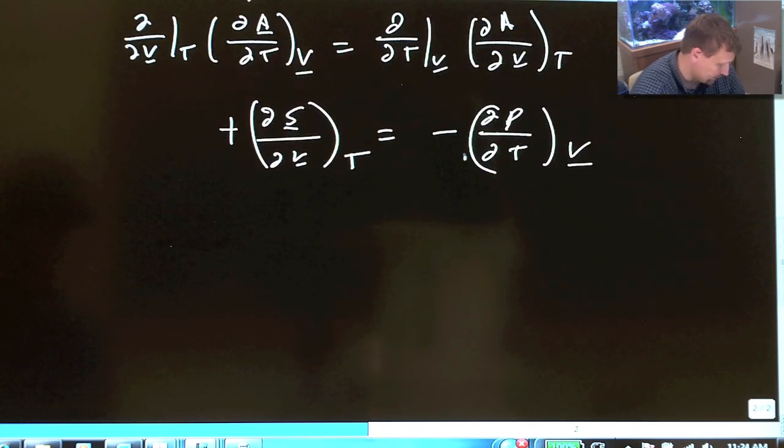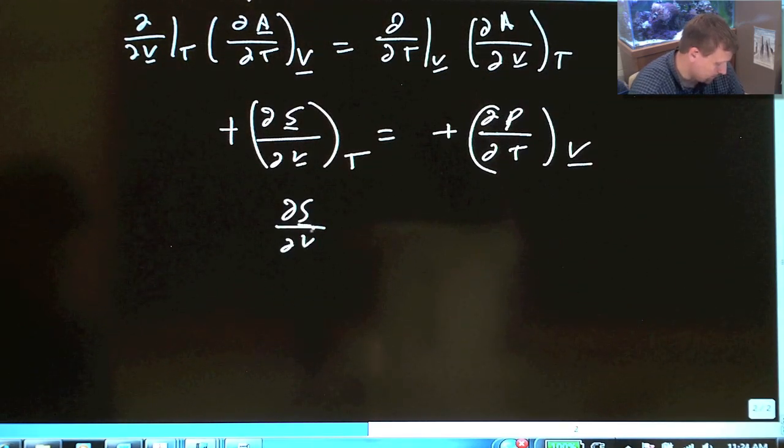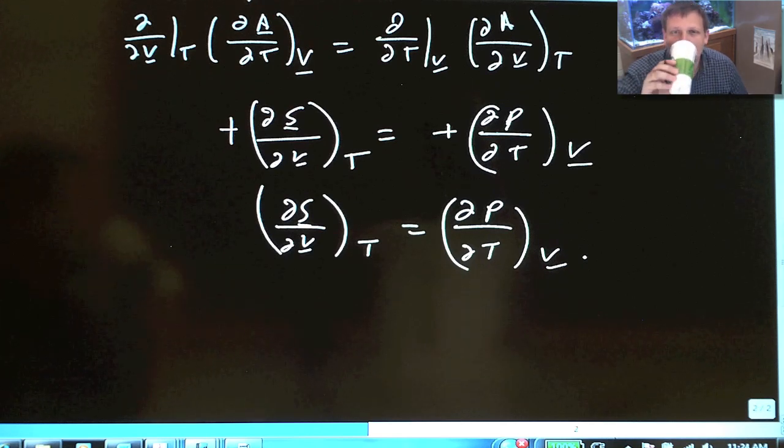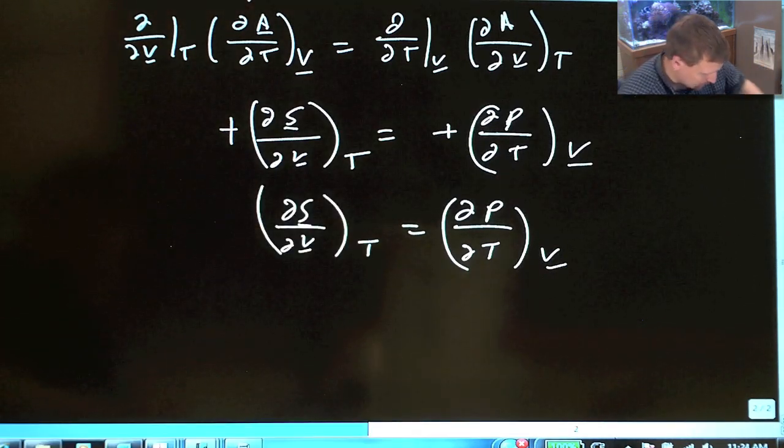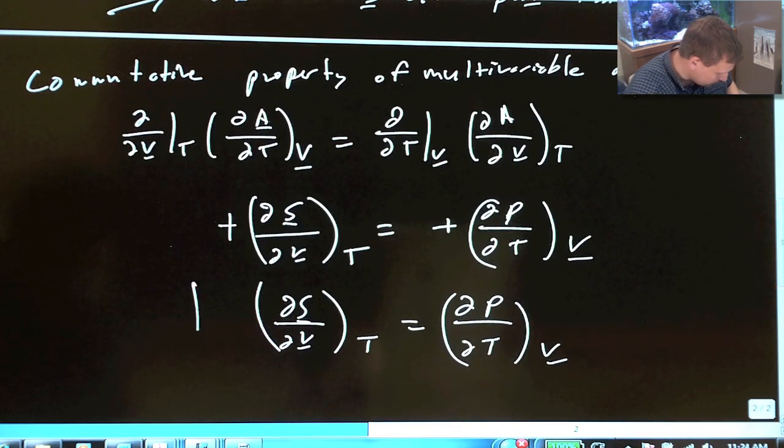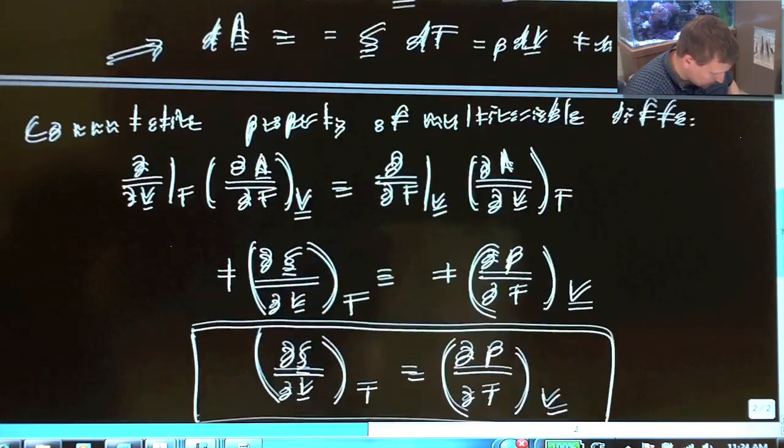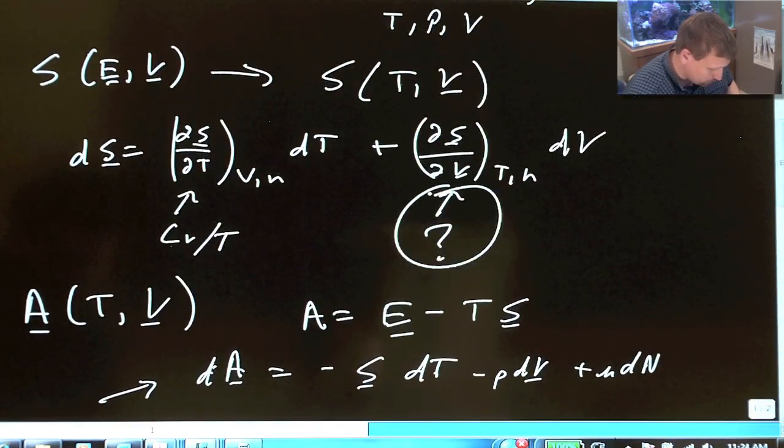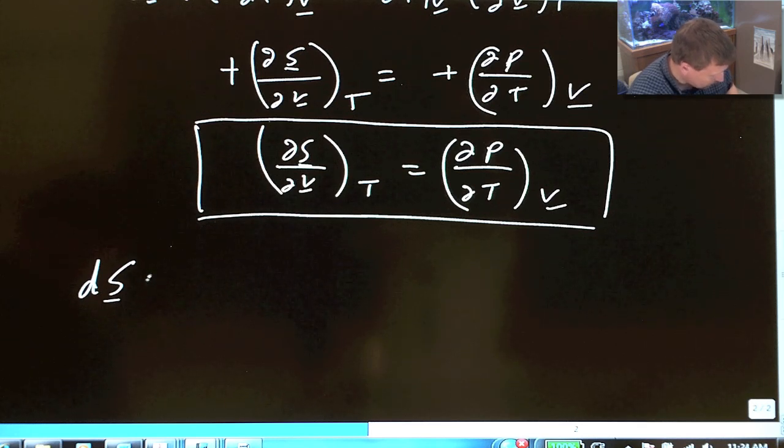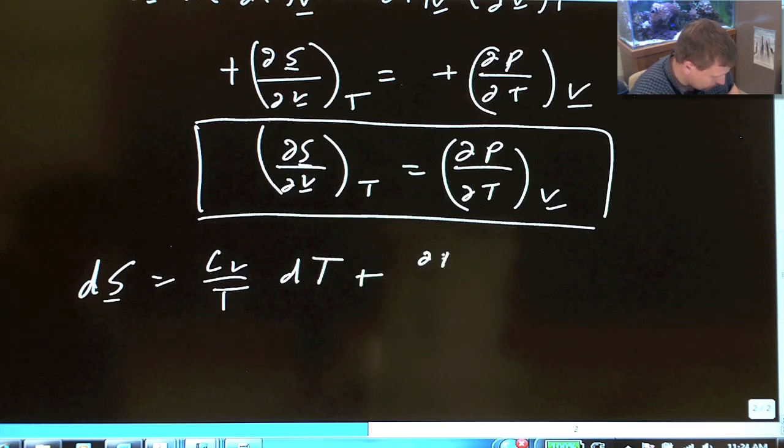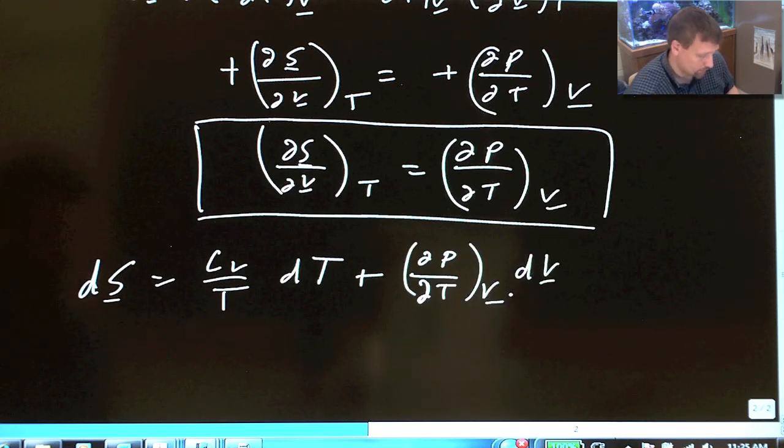So now, the minus signs will just cancel out, and we have del S del V constant T equals del P del T constant V. Now we can substitute in this relationship here into our equation up above here for this step in the process. So, we can rewrite now dS equals Cv over T, dT, plus del P del T constant V, dV.